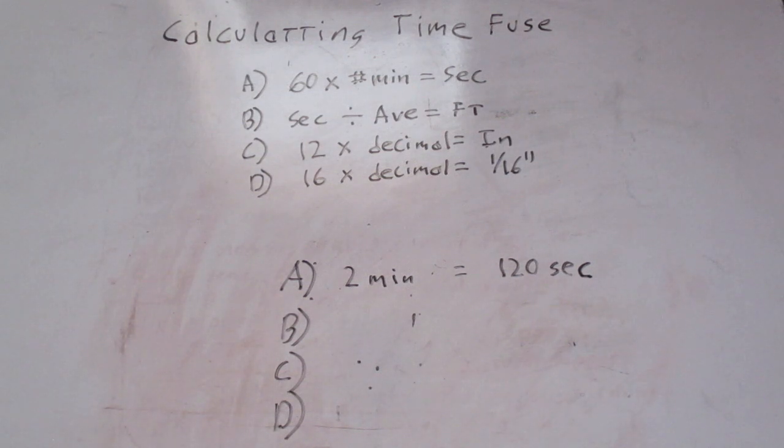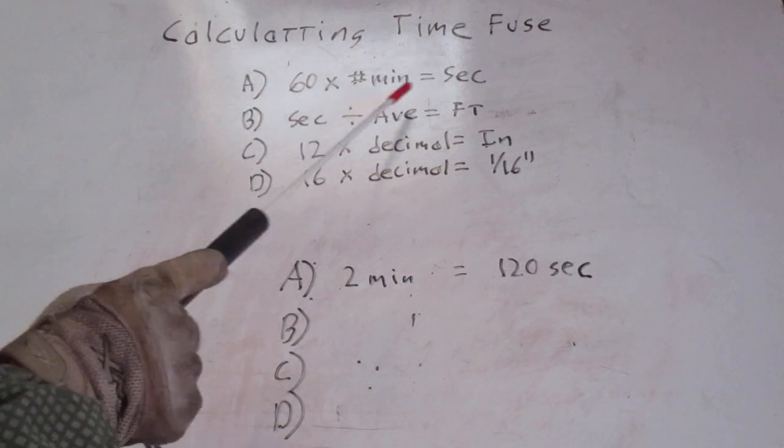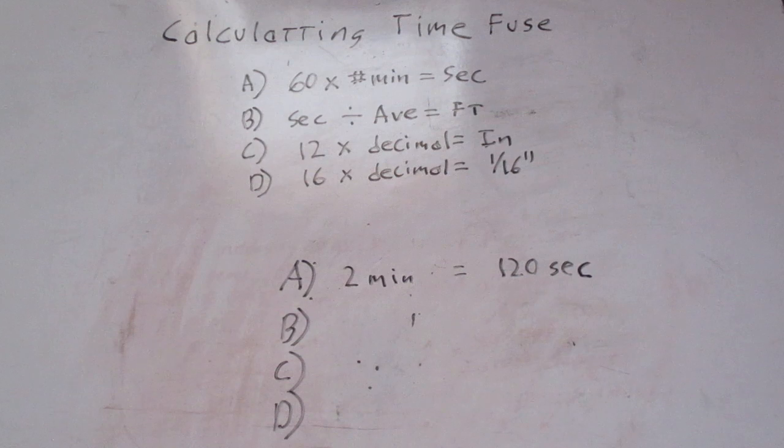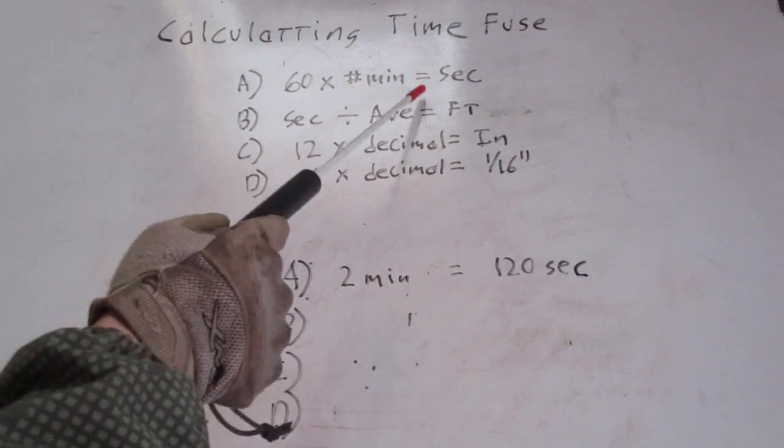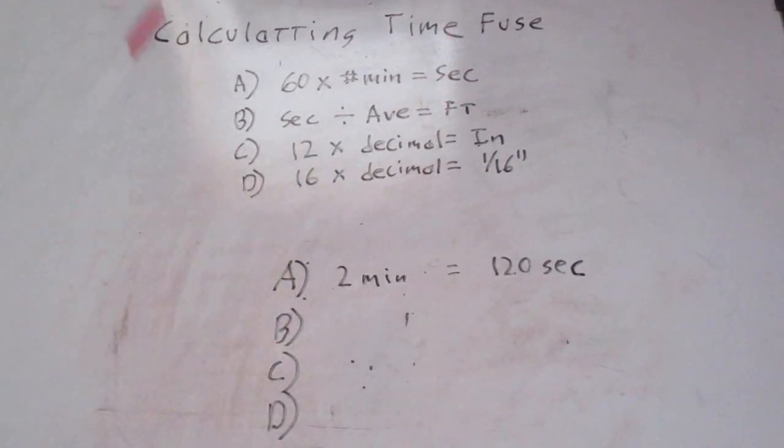Now the four steps for calculating your time fuse. First, you determine how much time you need. You take 60 times the number of minutes, which will give you the total seconds. If you need two minutes 30 seconds, you'll get your 120 and add your 30 on it, so you get a total of 150.